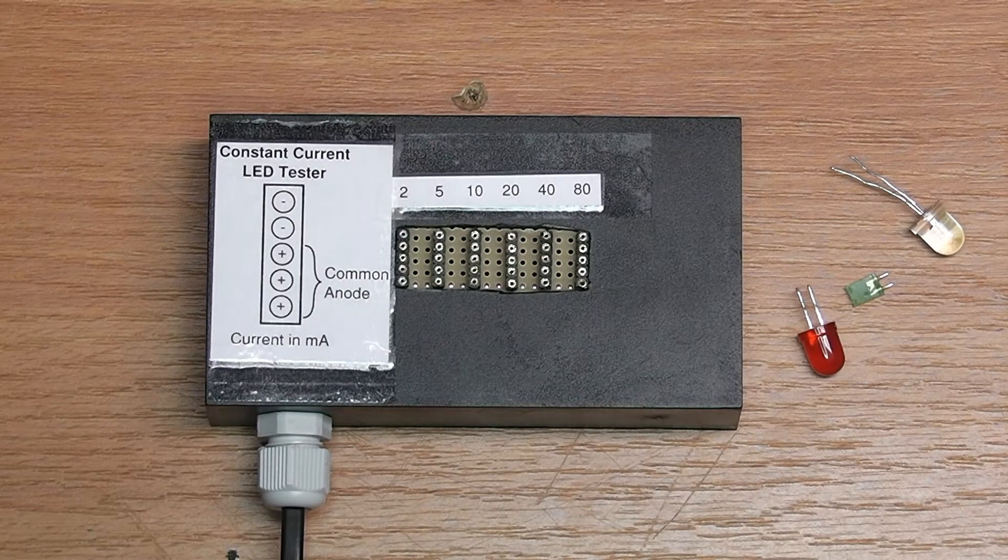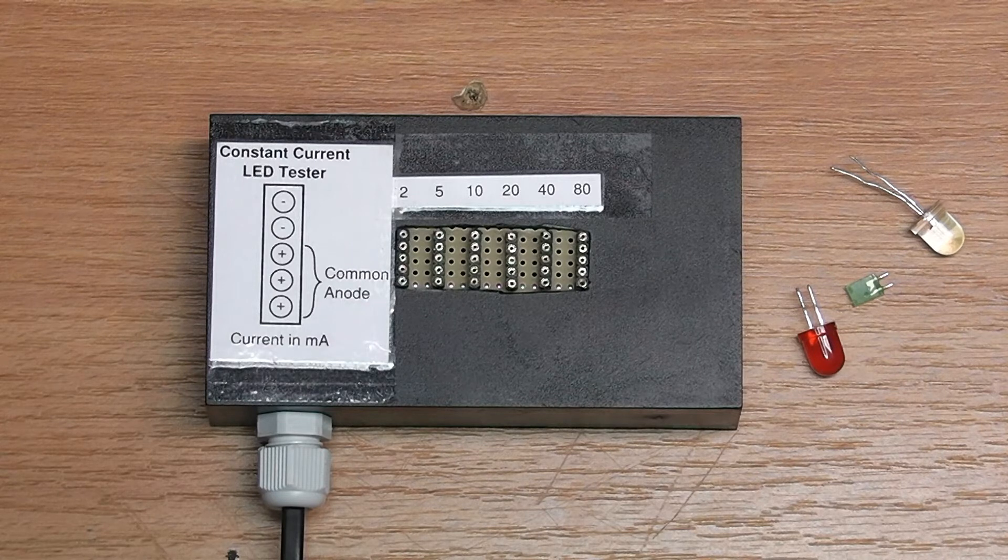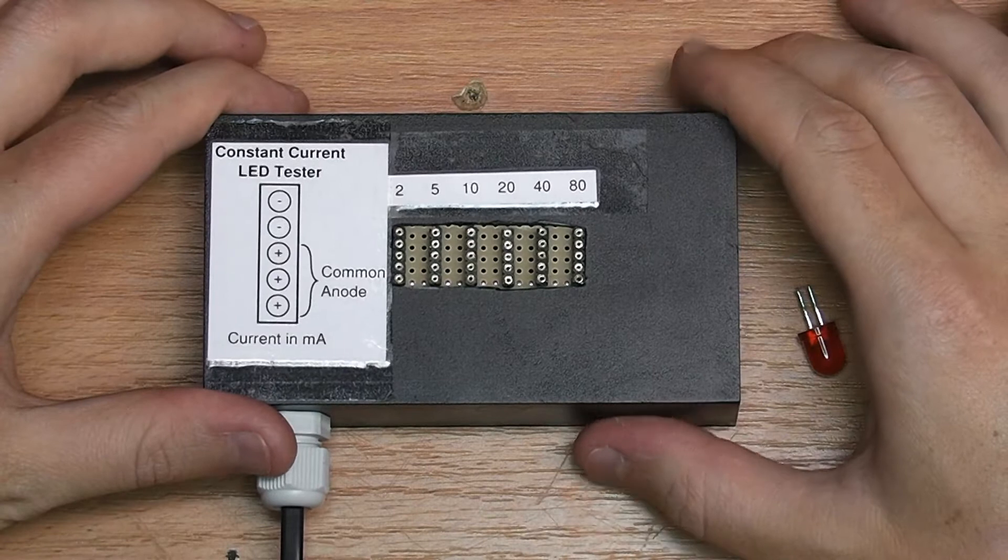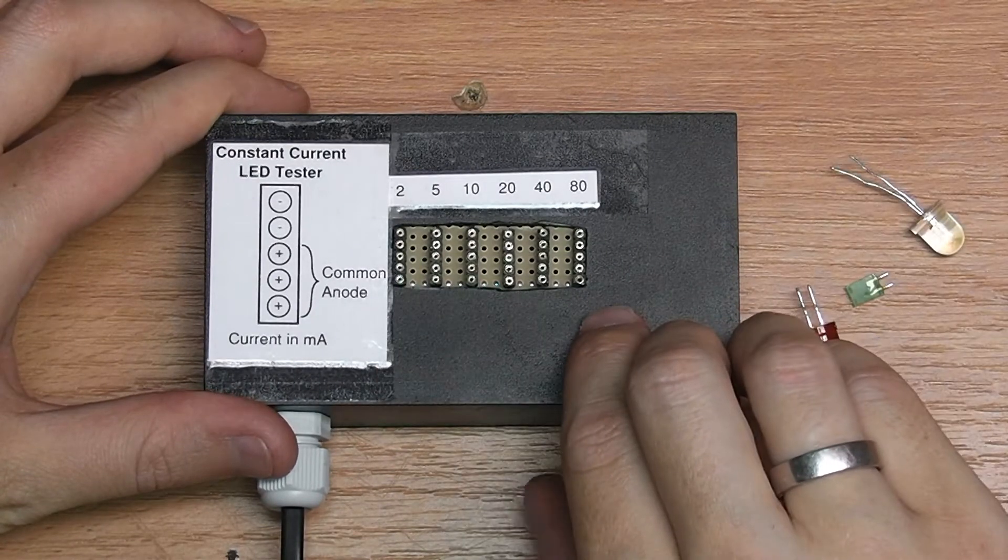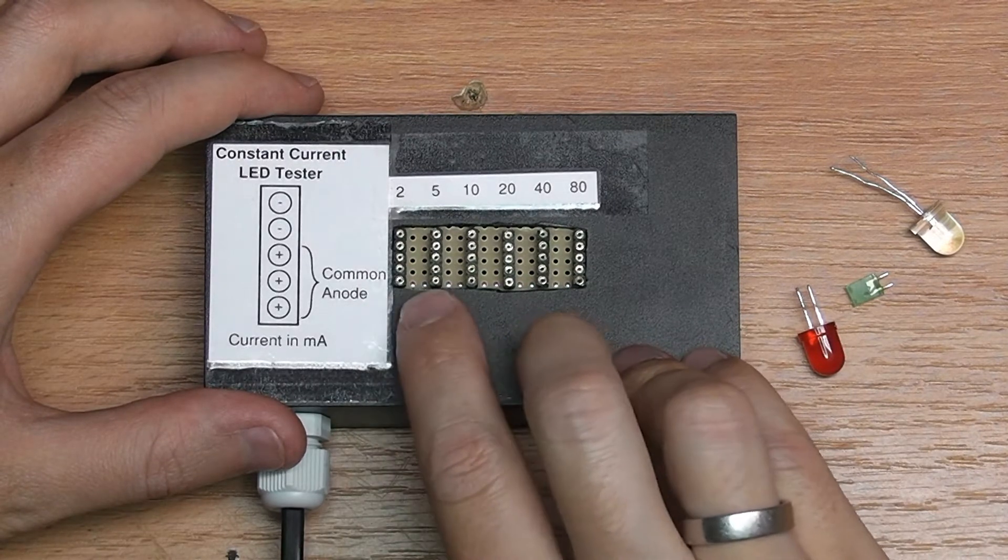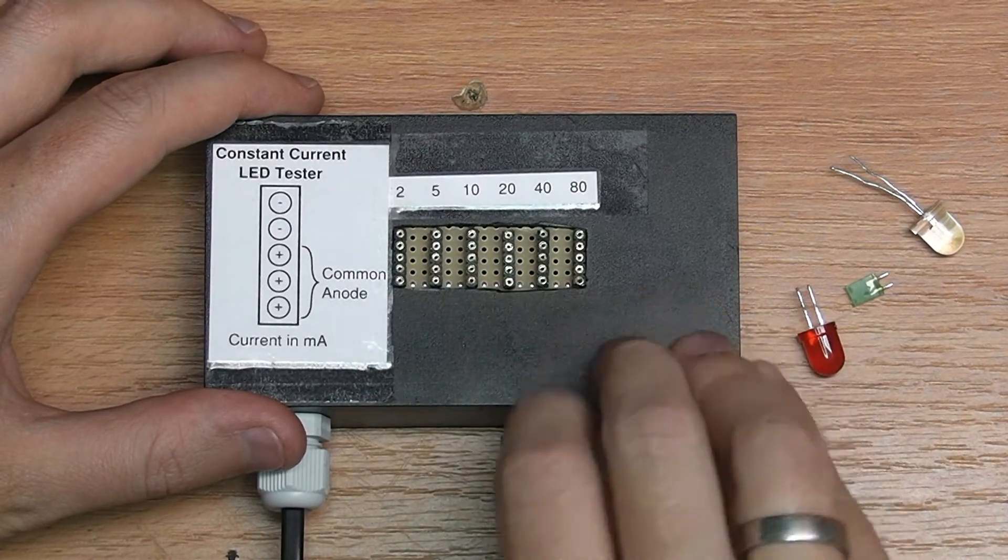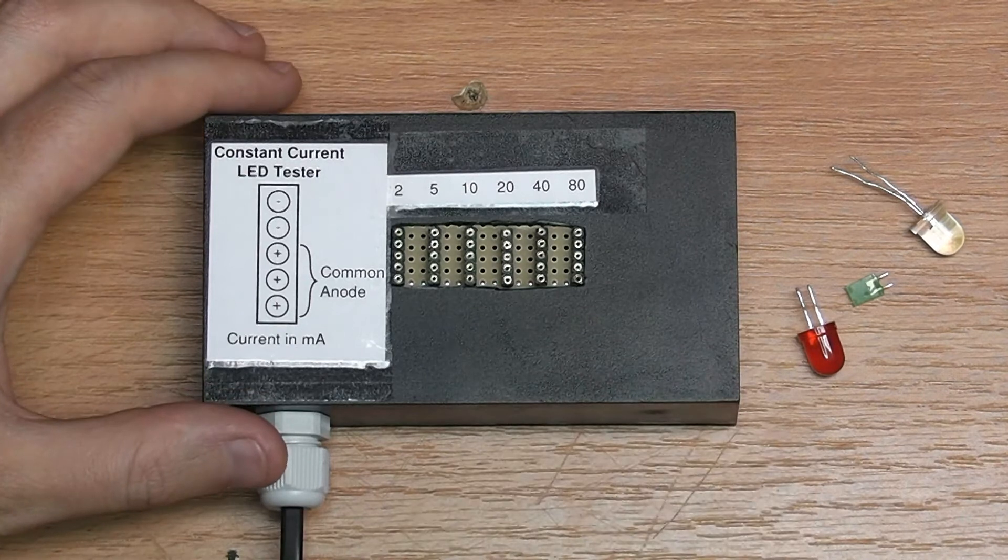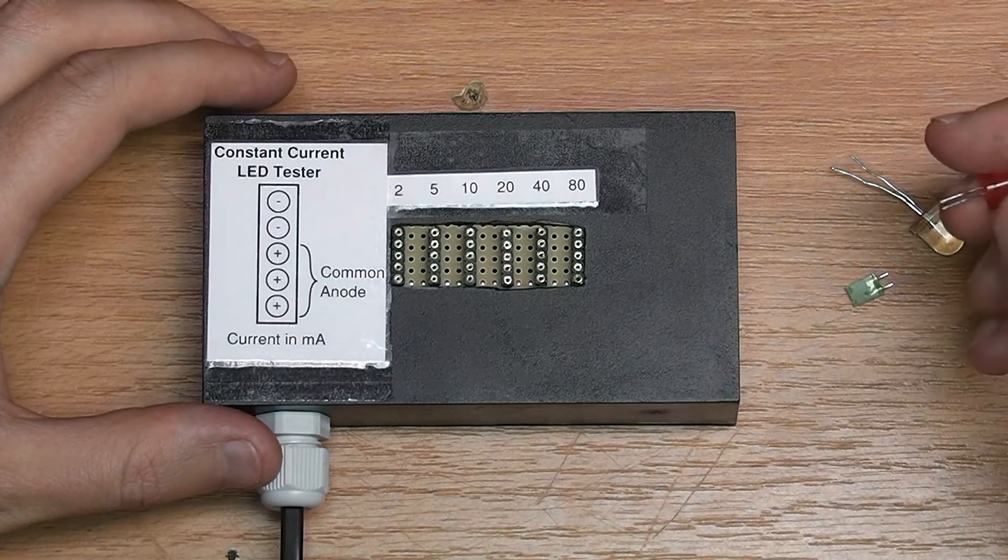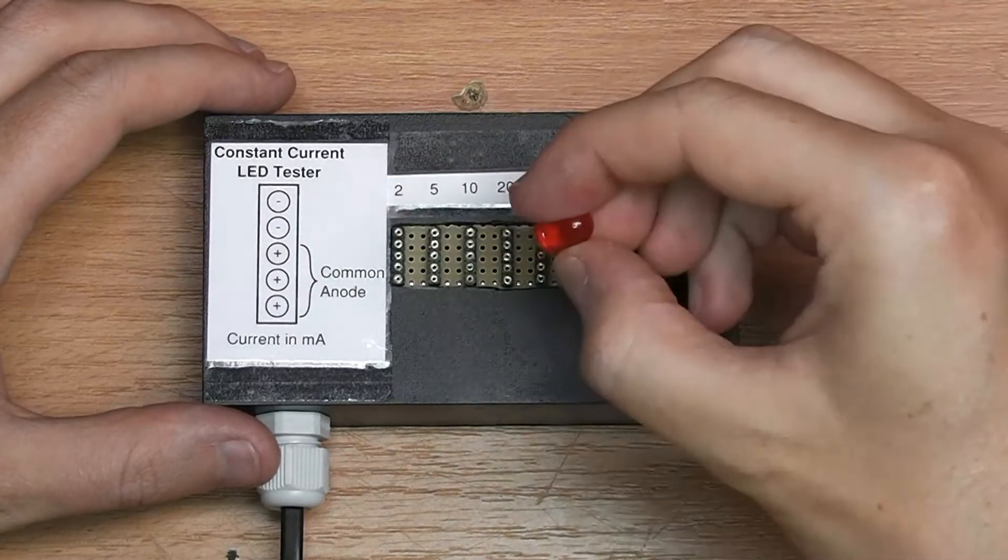Therefore having a constant current source is much easier and this is exactly what this device is. It's basically six separate constant current sources ranging over 2, 5, 10, 20, 40 and 80 milliamps and it allows me to just test the LEDs by placing them in the appropriate spot.